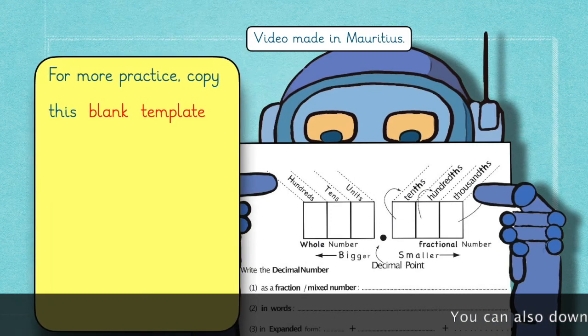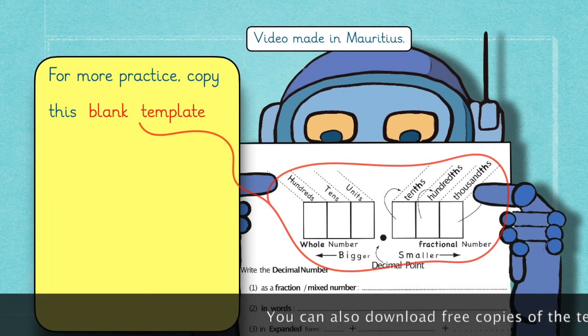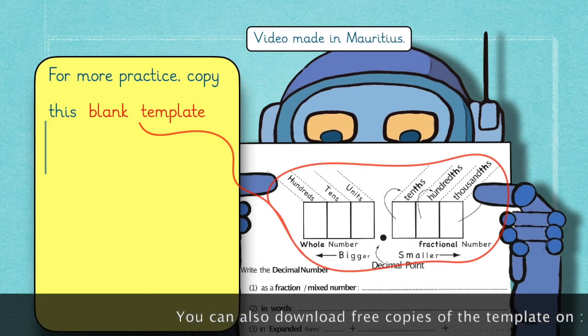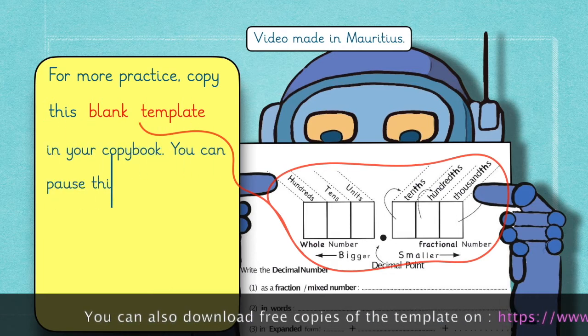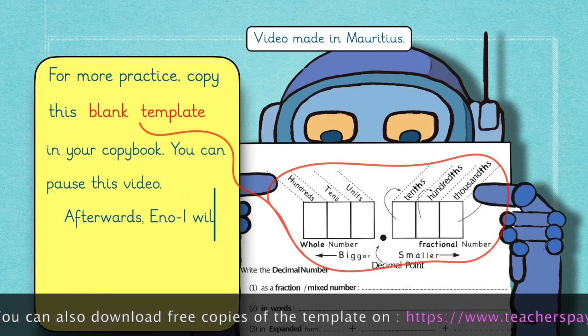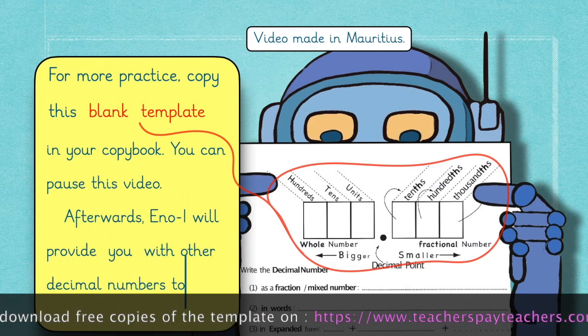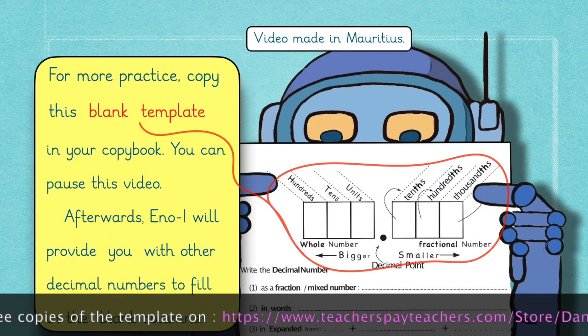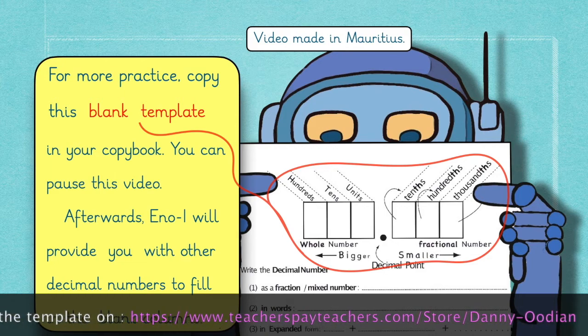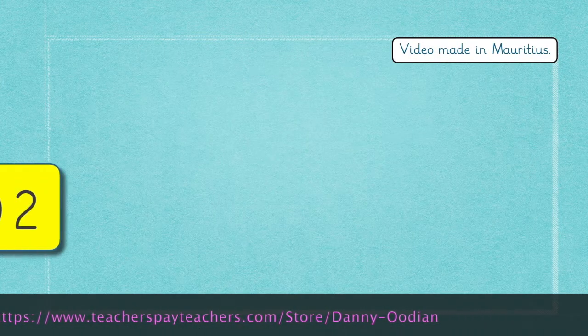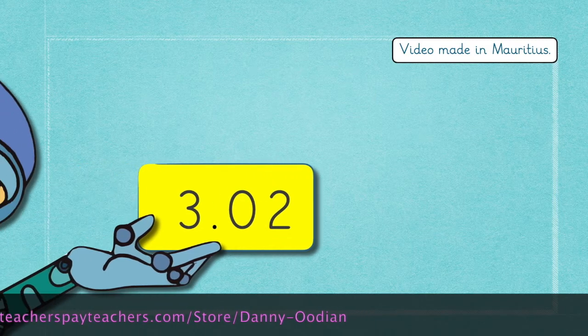For more practice, copy this blank template in your copy book. You can pause this video in order to copy. Afterwards, Eno1 will provide you with other decimal numbers to fill in the blank columns. Okay, ready. Eno1 will come up with a decimal number to fill in the columns.